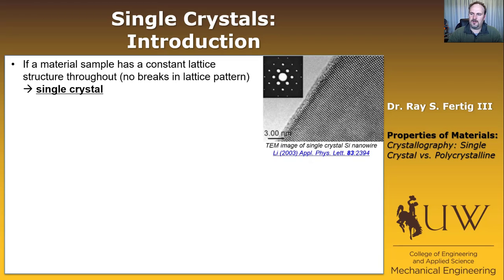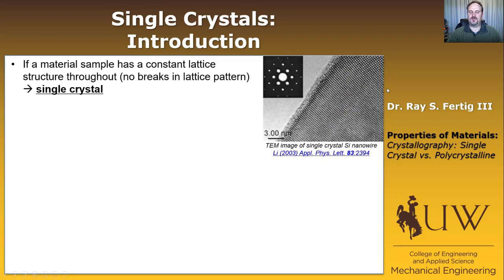This image is from a transmission electron microscope, with a scale bar of three nanometers. It shows silicon atoms, and you can see that the lattice the silicon atoms are forming is repeated throughout. That's an example of a single crystal.